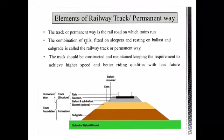The rails are fitted to the sleeper with the help of fish plates and fish bolts, and they are rested on the sleepers with the help of railway fastening. We have different types of fastening used to connect the rails with the sleepers, and the sleepers will finally rest on the ballast. You should ensure that the different rail sections are properly fitted with the fish plates.